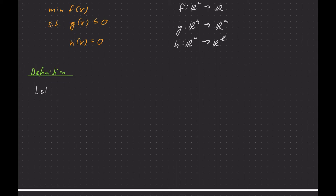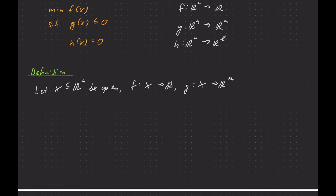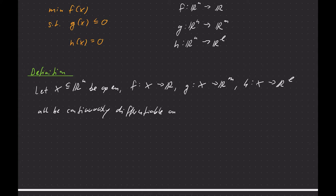As usual, we will work on an open set. Let X be a subset of R^n that is open, and then we'll have functions f, g, and h defined on that set X that are continuously differentiable. So f: X to R, g: X to R^m, h: X to R^l — let those all be continuously differentiable on X.